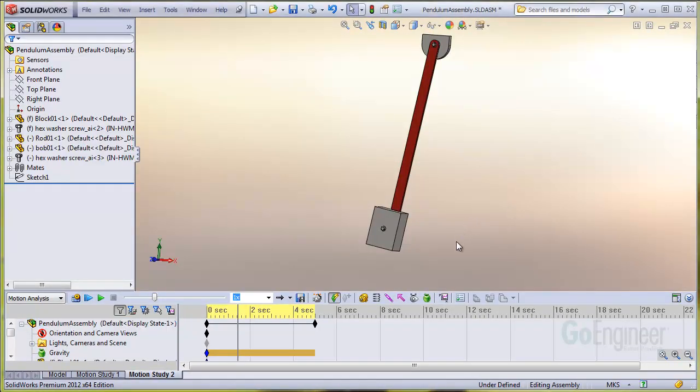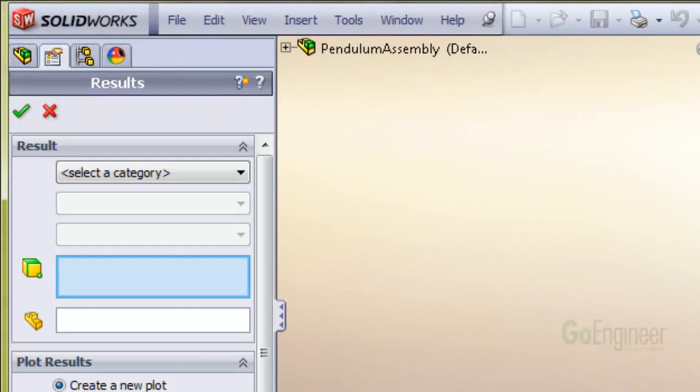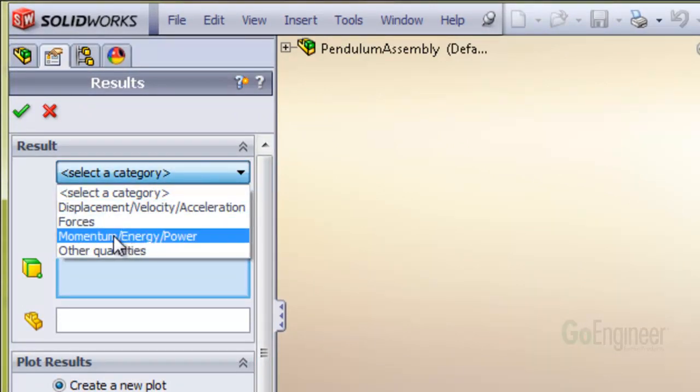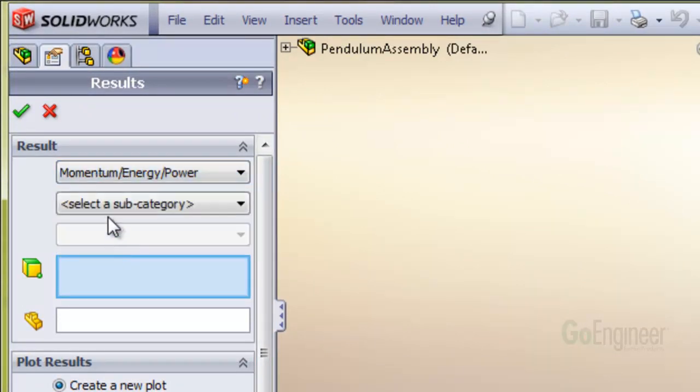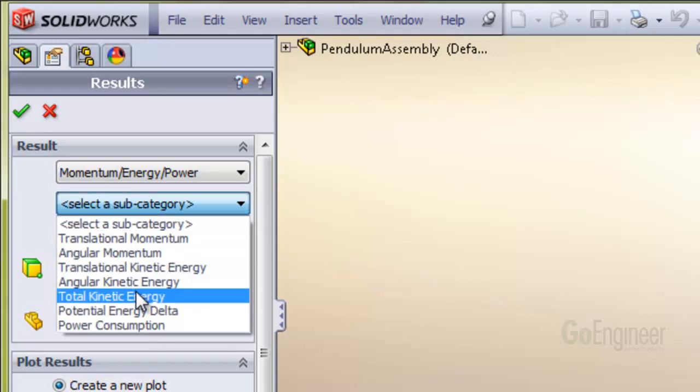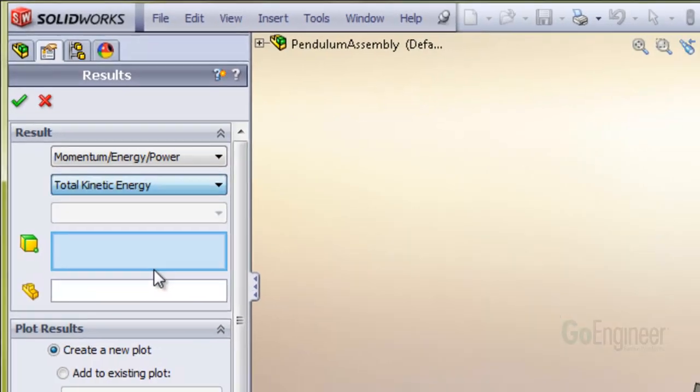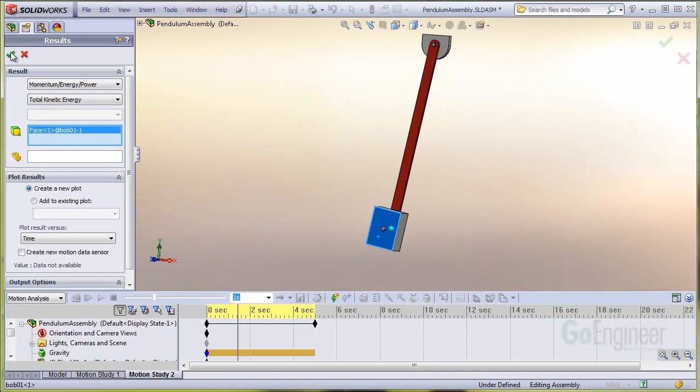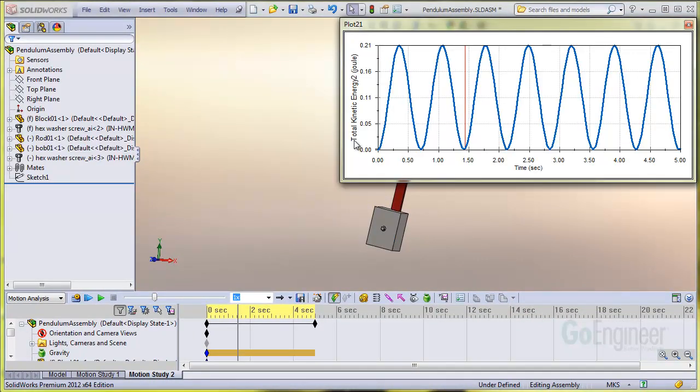In motion, I'll pull down momentum, energy, power, and total kinetic energy, and select the bob. You can see it starts out at 0 and reaches a maximum of 0.21 joules.